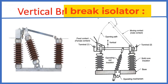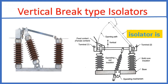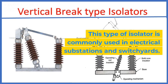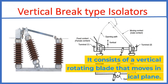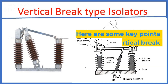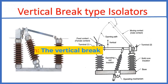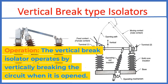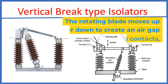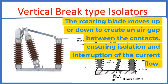Let's begin with the vertical brake isolator. This type of isolator is commonly used in electrical substations and switchyards. It consists of a vertical rotating blade that moves in a vertical plane. The vertical brake isolator operates by vertically breaking the circuit when it is opened — the rotating blade moves up or down to create an air gap between the contacts, ensuring isolation and interruption of the current flow.